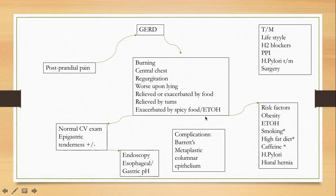An important complication to keep in mind: patients with chronic GERD can develop Barrett's esophagus. This occurs because repetitive acid insult causes a transition from squamous cell epithelium to metaplastic columnar epithelium at the lower esophagus. This is pre-malignant, so it is very important to remember.